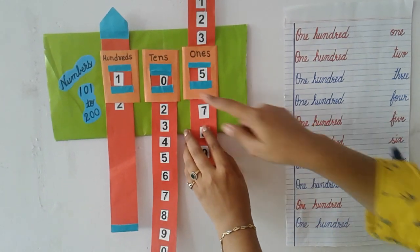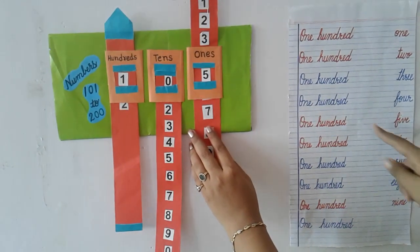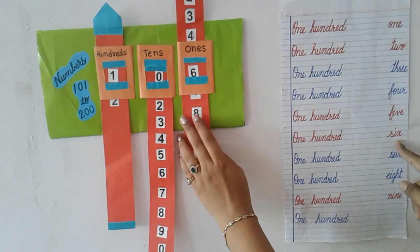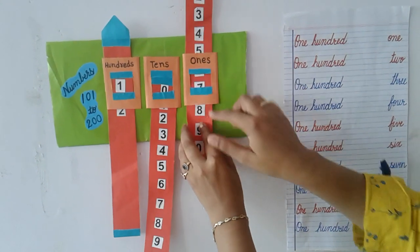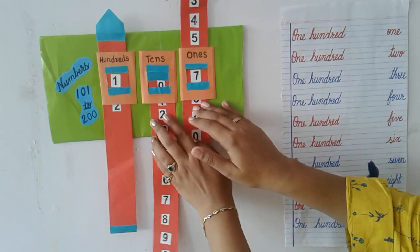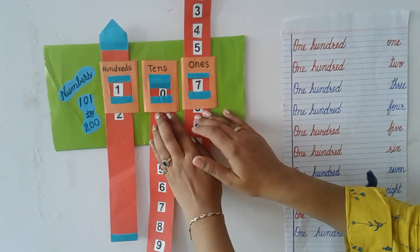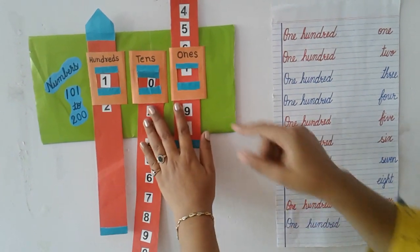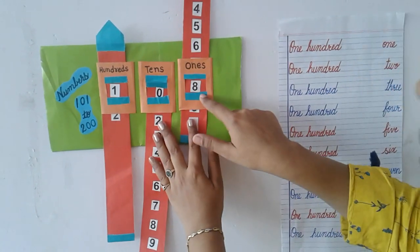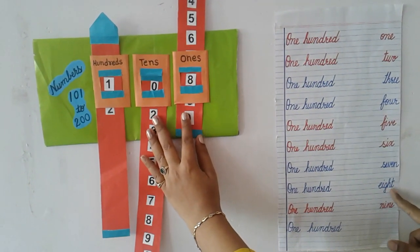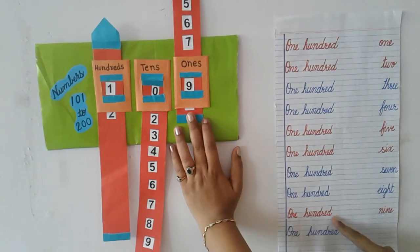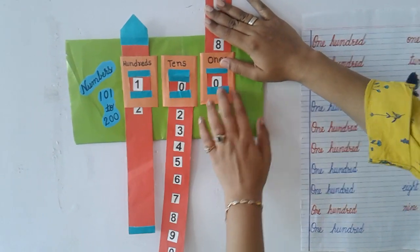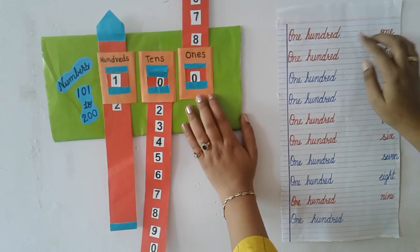Now the spelling of 105: ONE HUNDRED FIVE. 106: ONE HUNDRED SIX. Which number is this? 107. Here is the spelling of 107. Now we will see 108: ONE HUNDRED EIGHT. 109. Now let's see — which number is this again? 100. The spelling of 100 is ONE HUNDRED.